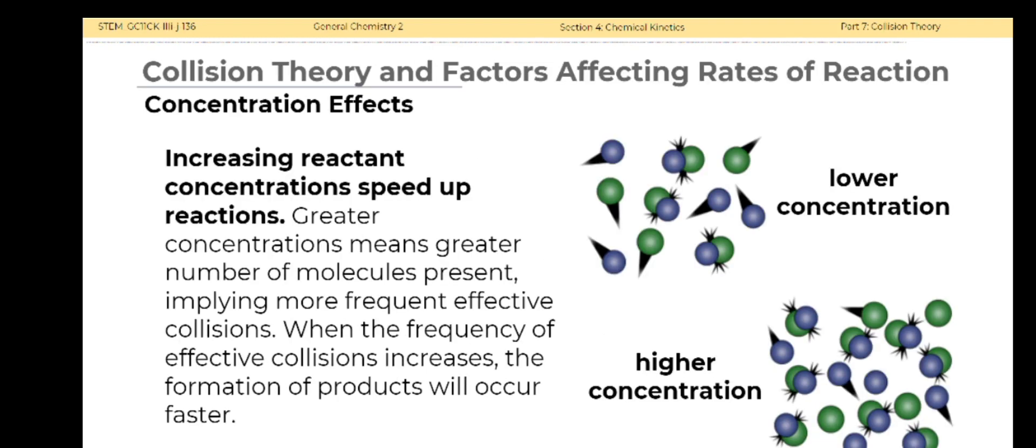Let us now use the collision theory to understand the effect of different factors on the rate of reaction. Increasing reactant concentrations speed up reactions. Greater concentrations means greater number of molecules present, implying more frequent effective collisions. When the frequency of effective collisions increases, the formation of products will occur faster.